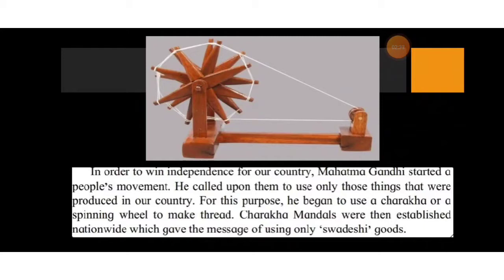Here you can see a charkha. During the time of independence, when Gandhiji was fighting for the freedom of the country, he promoted Swadeshi — using goods made in our own country. Gandhiji used a charkha to spin thread from cotton with his own hands. This thread was given to the loom and cloth was woven for Gandhiji, which he wore as a dhoti and shawl.